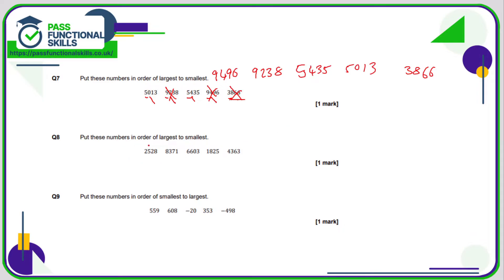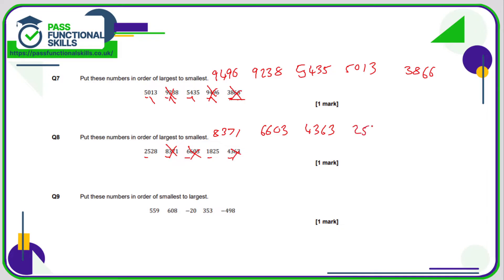Question 8: largest to smallest. They're all four digits, so let's look at the first digit: 2, 8, 6, 1, and 4. 8 is bigger than all others, so 8371 is the largest. 6 is the next largest — 6603. Now comparing 2, 1, and 4 — the next largest is 4363, then 2528, and finally 1825.